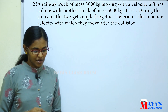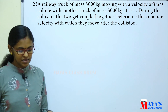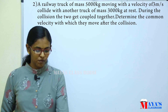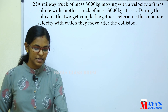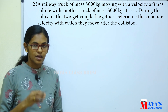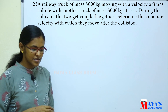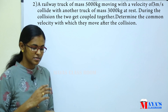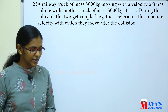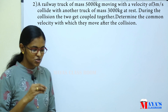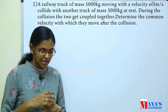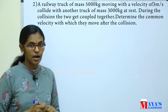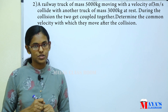A railway truck of mass 5000 kg moving with a velocity of 3 m per second collides with another truck of mass 3000 kg at rest. During the collision, the two get coupled together. Determine the common velocity with which they move after the collision.